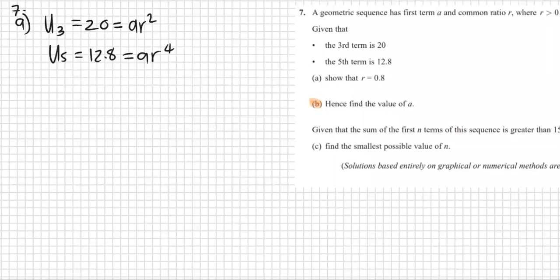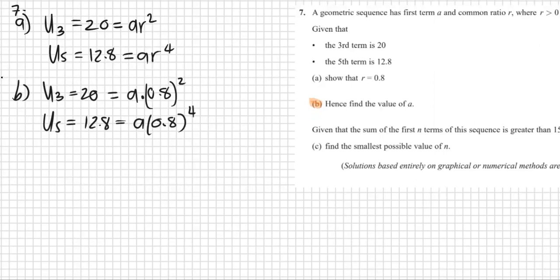Moving on to b. Part b says, what is a? Well, we know that u_3 is not only 20, but it's also ar². And we know that u_5 is not only 12.8, but it's also a times 0.8 to the power of 4. You've only got one unknown in both cases, so you could use either.